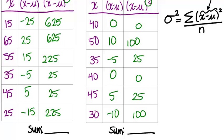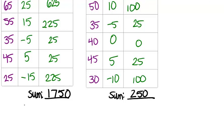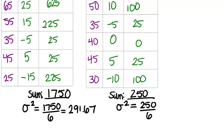So first we're going to add up 625, 625, 225, and so on, and then do the same thing for the brand B table. Okay. So we have our sum. And now in each case, we're going to divide the sum by six in order to get our variance. So the variance for brand A will be 1750 divided by six, which is 291.67. And the variance for brand B is 250 divided by six, which is 41.67.